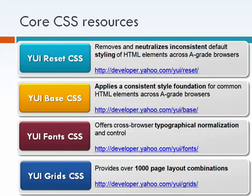What are the core CSS resources in the YUI Library? There are four file sets. First, there's the YUI Reset CSS, then the YUI Base CSS, the YUI Fonts CSS, and the YUI Grid CSS. The YUI Reset CSS is responsible for removing and neutralizing inconsistent default styling of HTML elements across the A-grade browsers. The YUI Base CSS applies a consistent style foundation for common HTML elements across A-grade browsers. Fonts CSS offers cross-browser typographical normalization and control. Grid CSS provides over 1,000 page layout combinations for the developer.